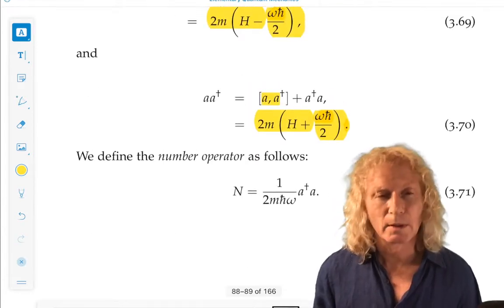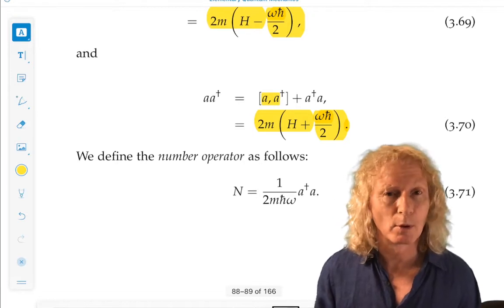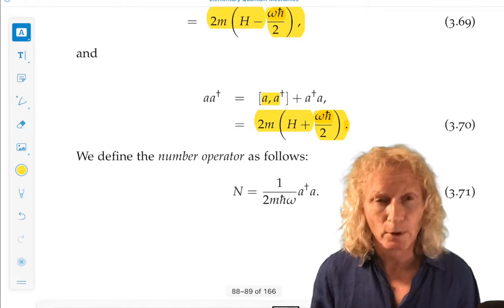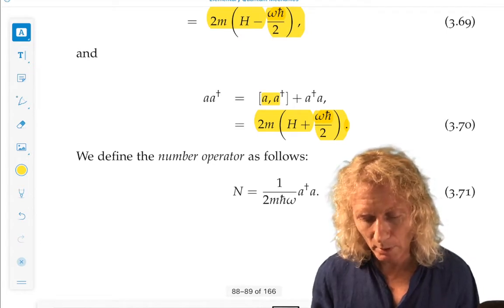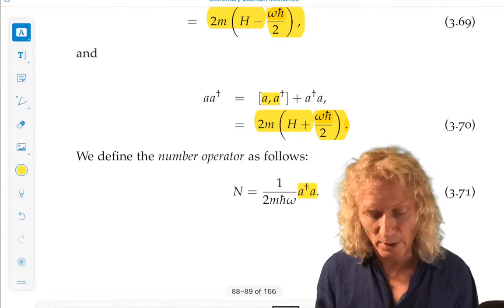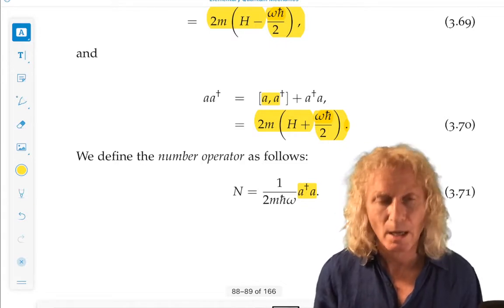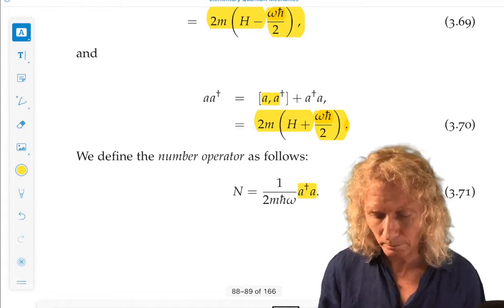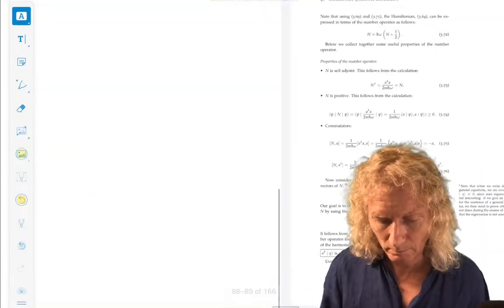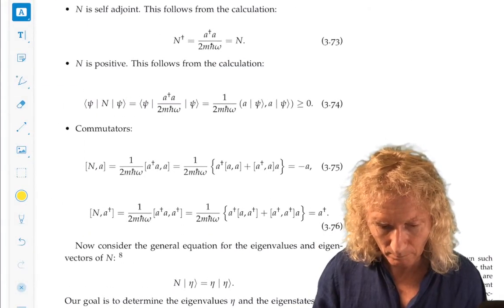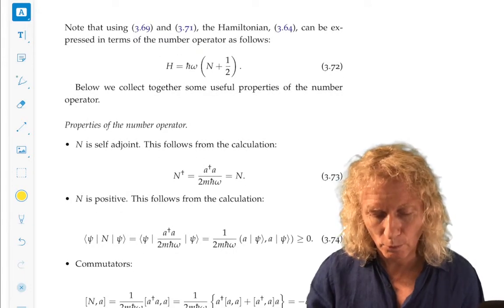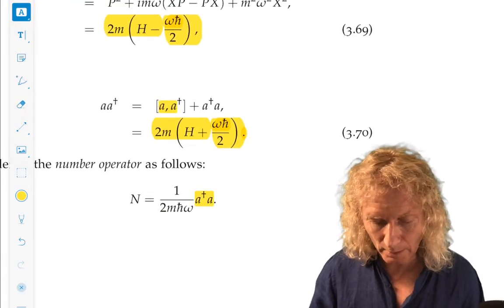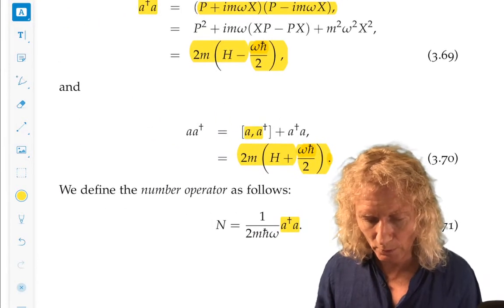Now, something that is going to be the key quantity in which we work is called the number operator. It's got a constant out front, a real constant, 1 over 2m h bar omega, and multiplying a dagger a. Okay. The number operator. Uppercase N.